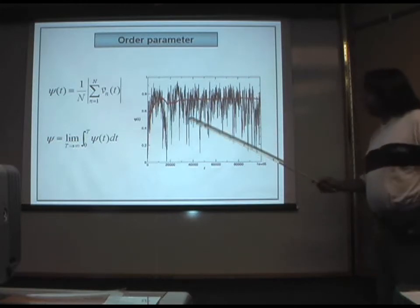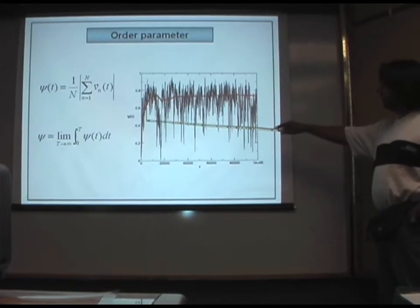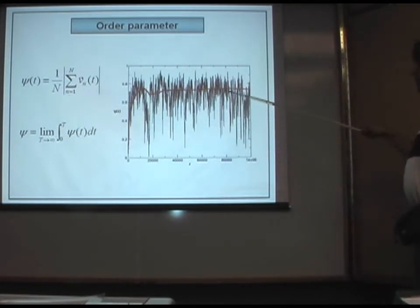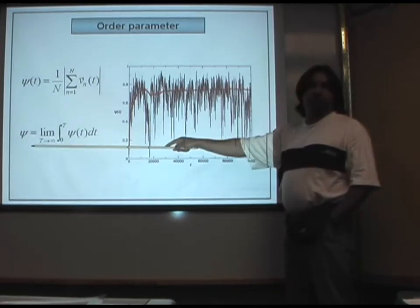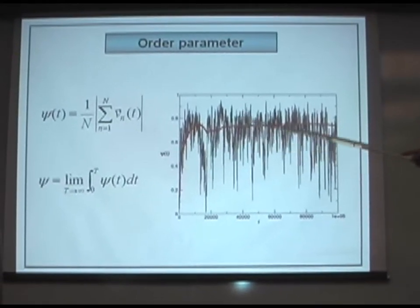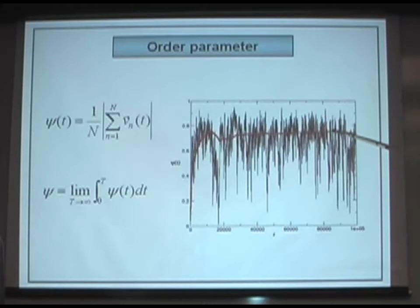In order to measure the amount of order in the system, we define the order parameter, which is just the average velocity of the entire system averaged over time. You can see here there is intermittent behavior and a lot of fluctuations, but the system reaches a steady state in terms of this order parameter. The red line is this temporal average of the instantaneous order parameter, and this steady state is not an equilibrium state because numerical simulations show that the detailed balance condition is not satisfied, even if the system has reached the steady state.